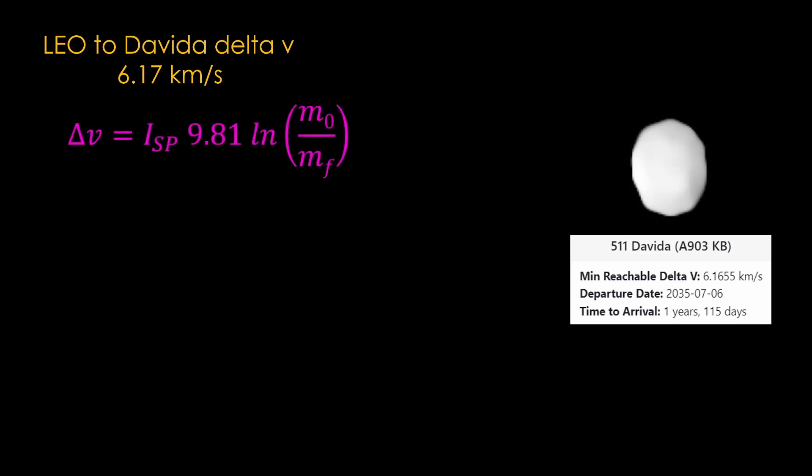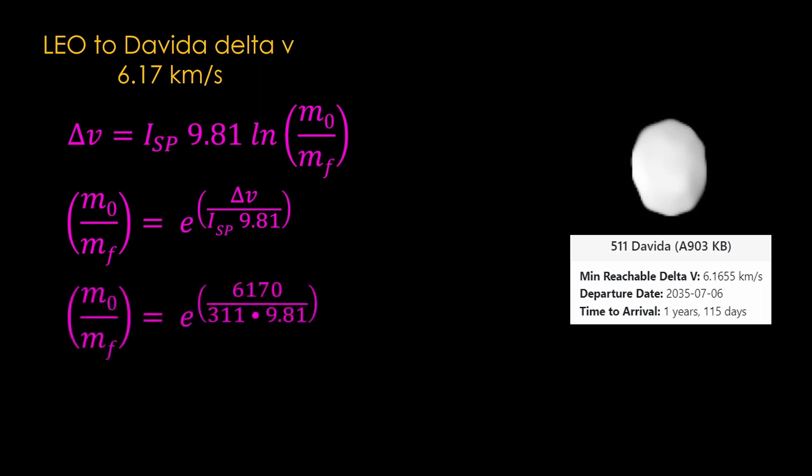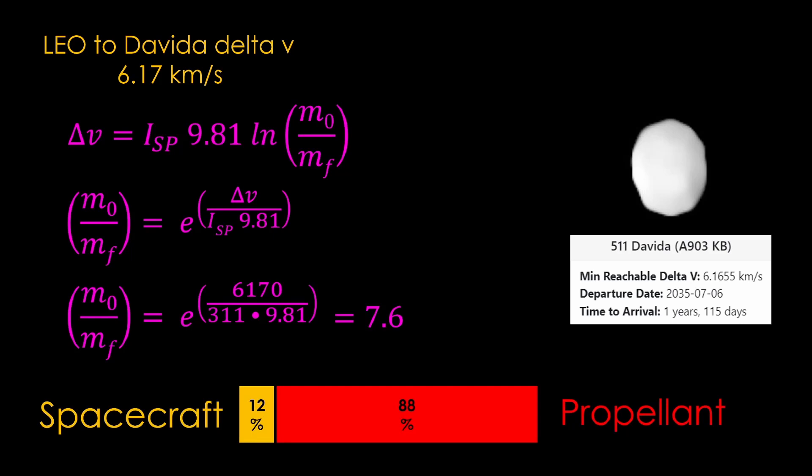We can refactor the rocket equation so that we can plug in the delta-V we need and get back the mass ratio. E in the equation is the natural number E, which is about 2.7. If we choose hypergolic propellants, they have a specific impulse of about 311. Plug that into the equation with the delta-V we get and the answer we get is 7.6. That means we spend 12% of our mass on the spacecraft, the structure, the engines, the electronics, and whatever payload we are carrying, and 88% of our mass on propellant. This illustrates why the usual method is to use the launch vehicle to provide the velocity to get away from Earth.